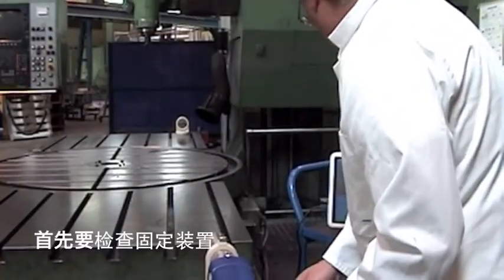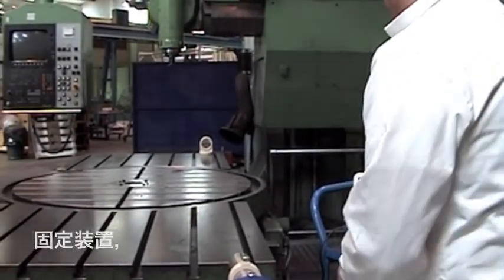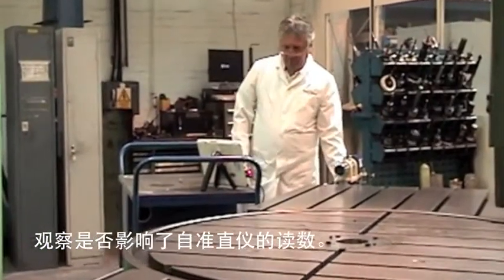First to check the fixturing. Normally I just touch the back of the autocollimator or the fixturing it's sitting on and see if that affects the reading of the autocollimator.